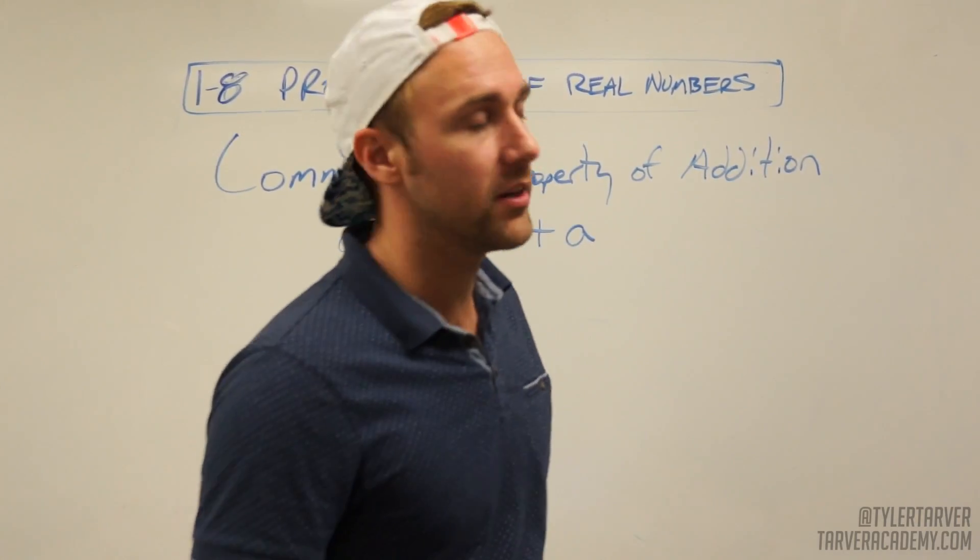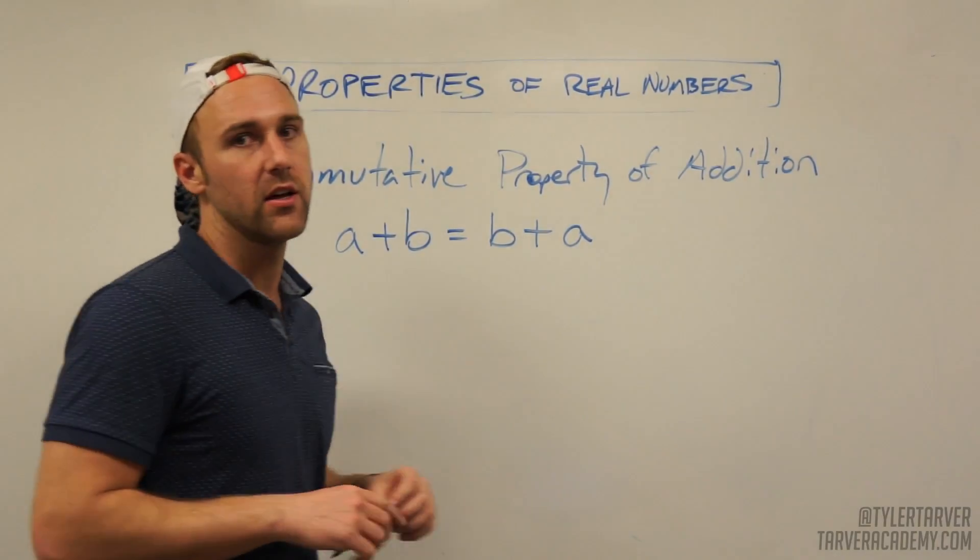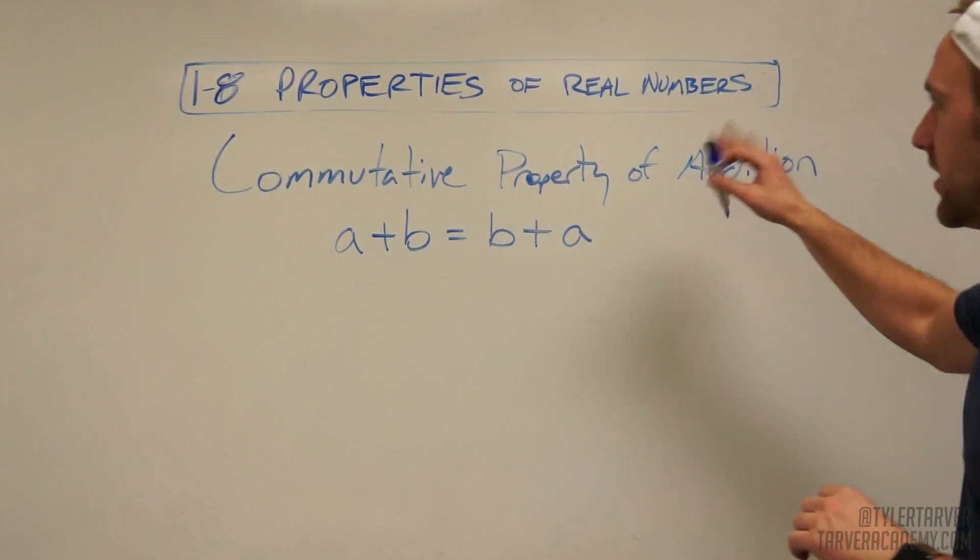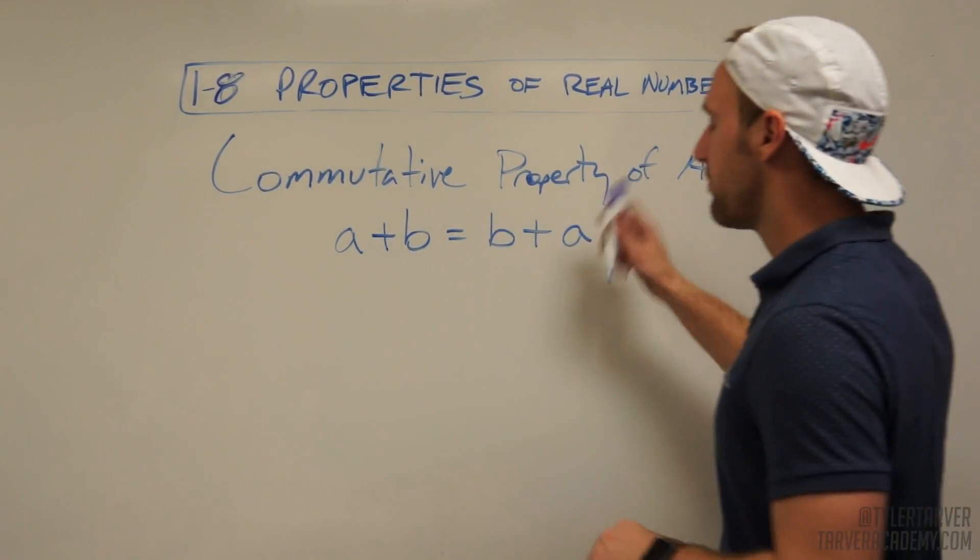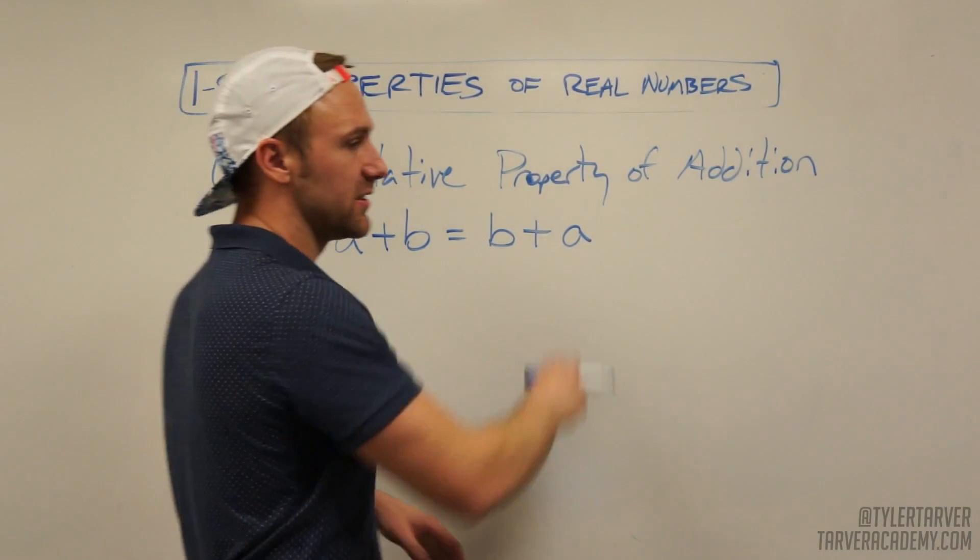What up? Tyler here from TarverAcademy.com. I'm going to hit you with some properties of real numbers. The first property I want to talk about is the commutative property of addition. Commutative property of addition. What that means is A plus B equals B plus A.